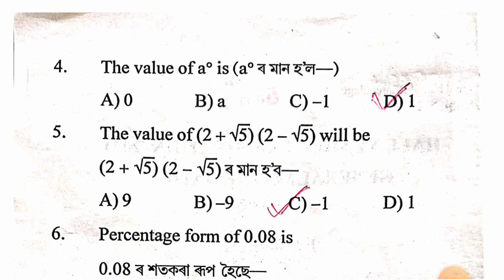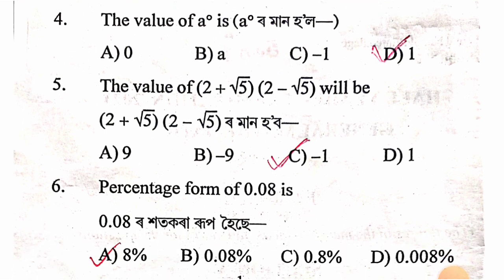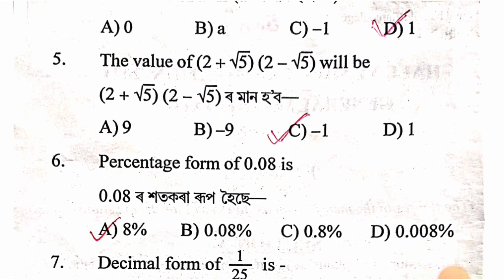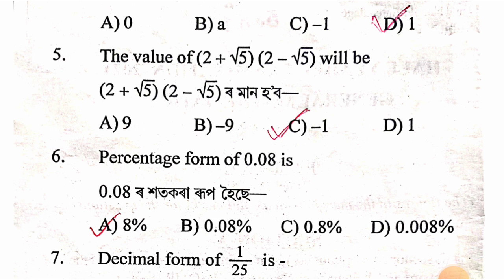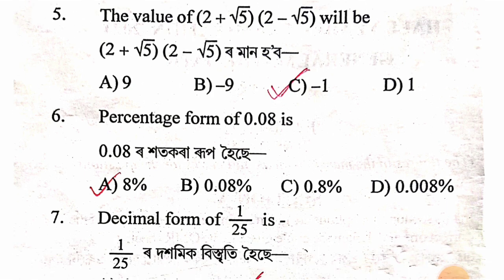The value of (2 + √5)(2 − √5): using the identity (a+b)(a−b) = a²−b², where a²=4 and b²=5, the result is 4−5 = −1.